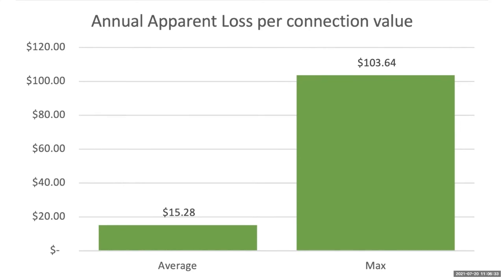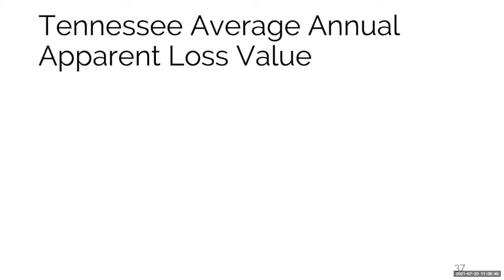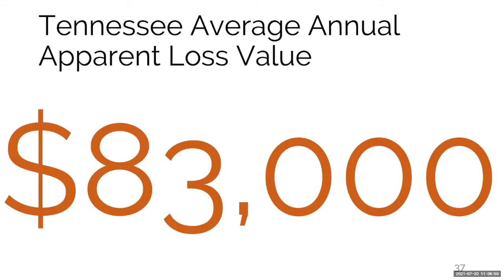Think about how many customers you have, look at these numbers, and see what the basic math tells you. The average apparent loss in Tennessee is about $83,000 across all systems with audits — and obviously larger systems will see larger dollar figures.